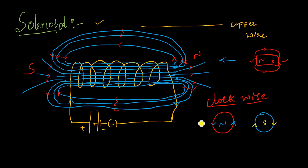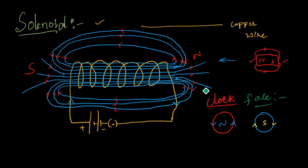Using the clock face rule: when you are looking at this side facing us, if the current is moving in a clockwise direction, that is the south pole. If the current is moving inside the conductor in an anti-clockwise direction, that is the north pole. So by using the clock face rule, we can identify the poles of the solenoid.